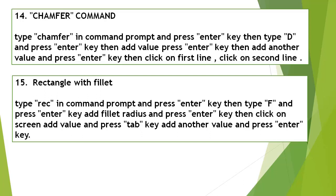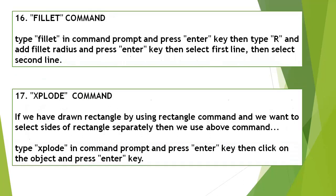Rectangle with Fillet: Type Rectangle in the Command Line Window and press Enter, type F and press Enter, add the fillet radius and press Enter, then click on the screen, add a value, press Tab, add another value and press Enter. Fillet Command: Type Fillet in the Command Line Window and press Enter, type R and add the fillet radius and press Enter, then select the first line and select the second line.